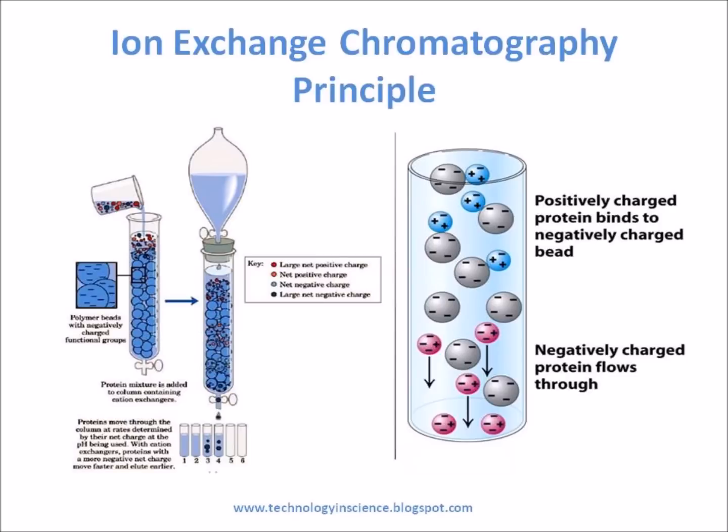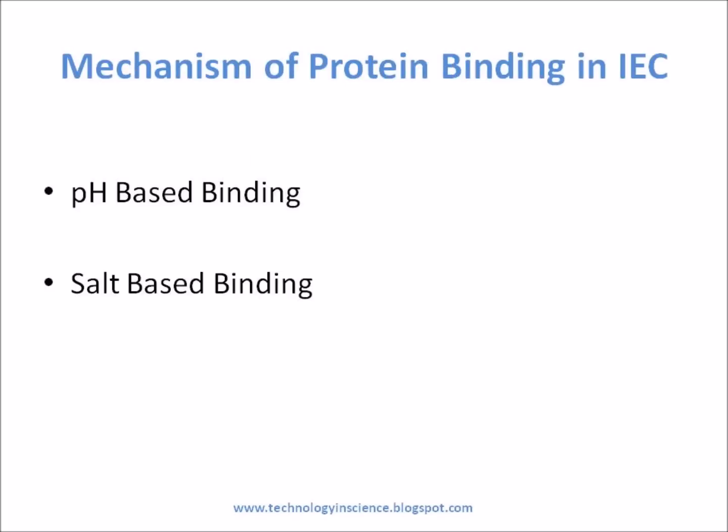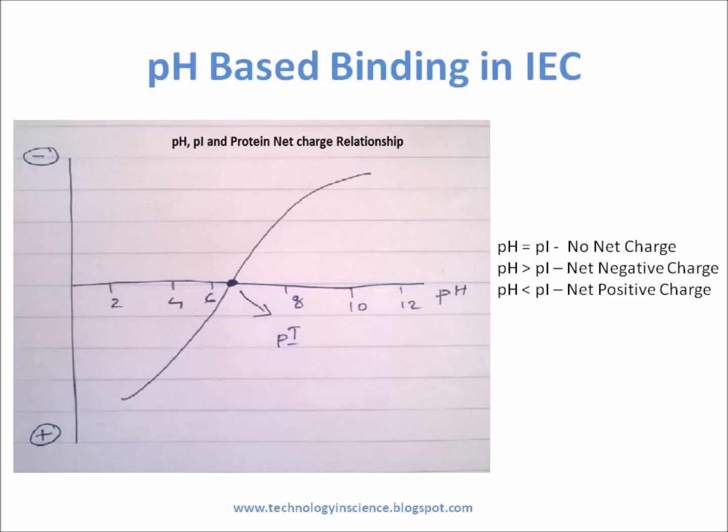There are two mechanisms mainly used in the separation of proteins in ion-exchange chromatography: one is pH-based and the other is salt-based. Separation of molecules by ion-exchange chromatography relies on differences between the net surface charges on the solute molecules.